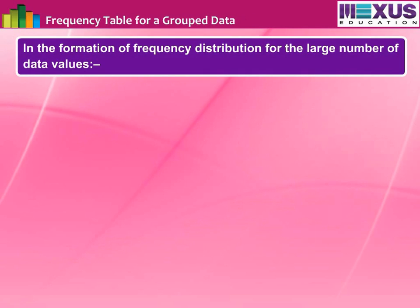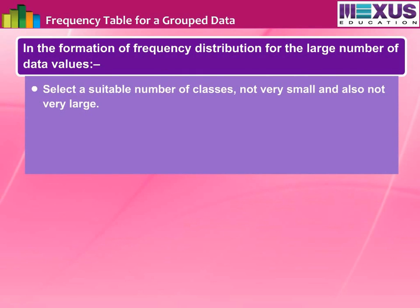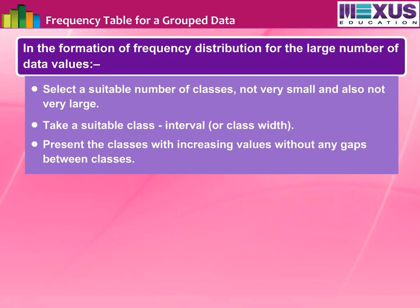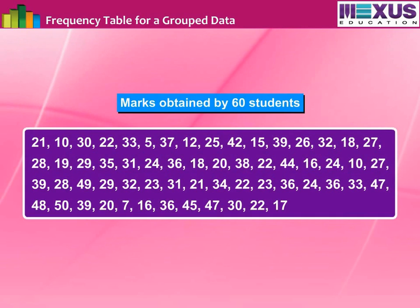In the formation of frequency distribution for a large number of data values, we have to group the data first. For that, we should select a suitable number of classes — not very small and also not very large. We should take a suitable class interval or class width and present the classes with increasing values without any gaps between classes.